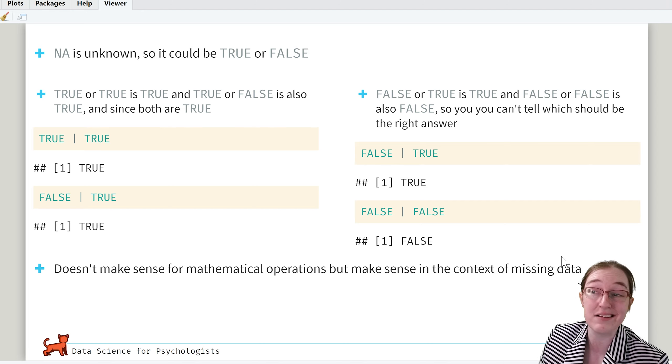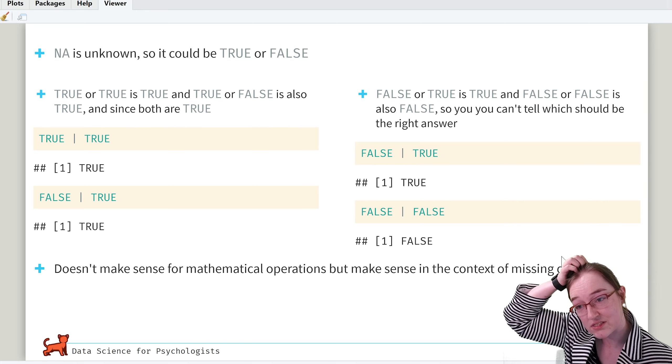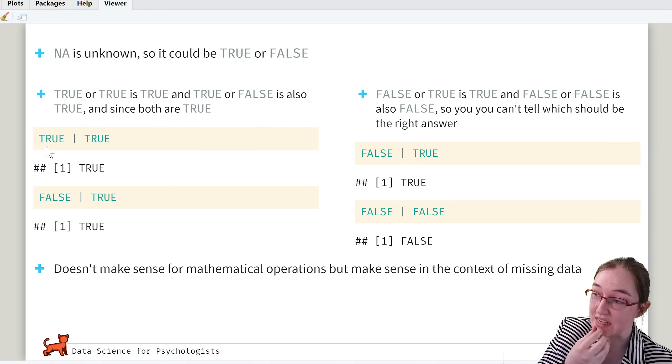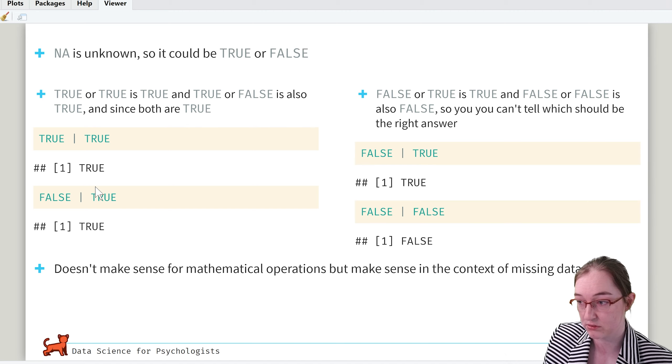So NA is unknown, so it could be either. It could be TRUE or FALSE. So when we put in TRUE or FALSE, what we get is TRUE and TRUE or FALSE, which is also TRUE and therefore both are TRUE. So you can essentially pop in both of these. We've got TRUE or TRUE gives us TRUE and FALSE or TRUE gives us TRUE.